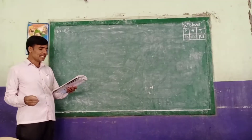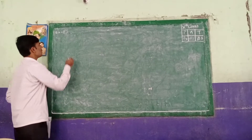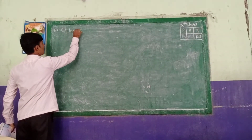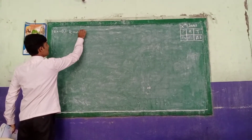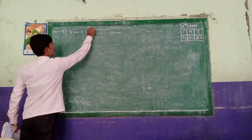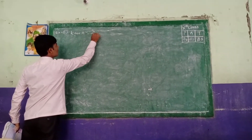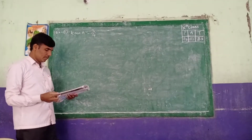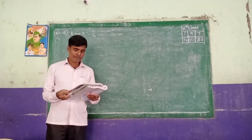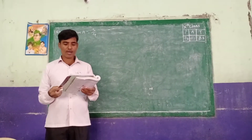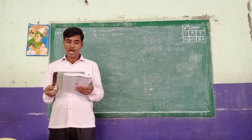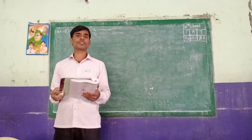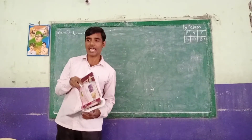If tan A equal to 3 by 4, find the other trigonometric ratios of angle A.